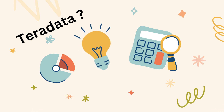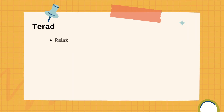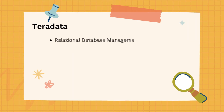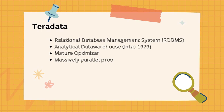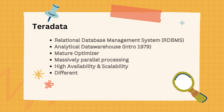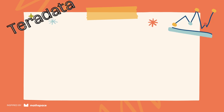Now, what is Teradata and what is its position in the current industry? Teradata is a relational database management system. It is one of the largest commercialized analytical data warehouses, introduced back in 1979. It has features like a mature optimizer, massively parallel processing, high availability, proven scalability, and supports data models like star schema and snowflake schema, embedding normalizing principles. It also reduces data size with various types of compression.